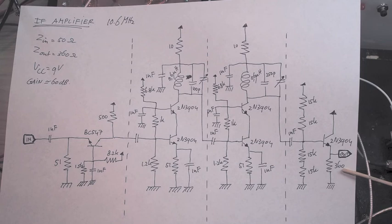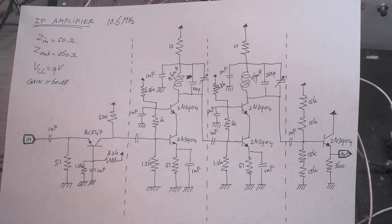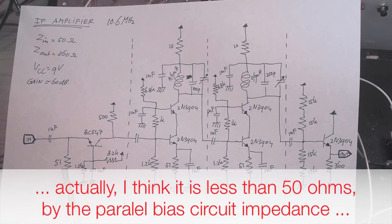It just provides 360 ohms output impedance for the next stage which needs a 330 ohms input impedance. So that's a quite nice match. The input impedance of this amplifier is 51 ohms by means of this resistor here.